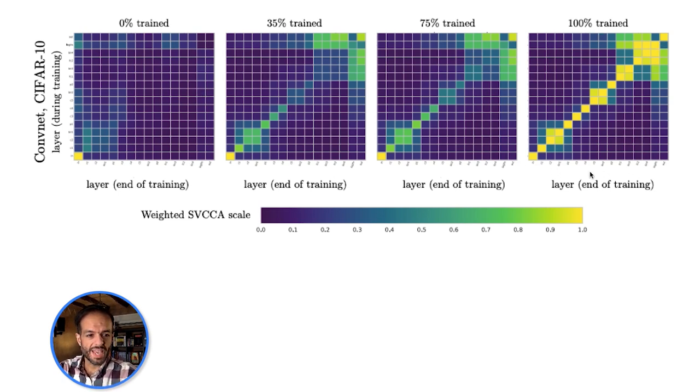As we go to the left, the x-axis continues to be the value of the outputs of each layer at the end of training, but the y-axis now is at 75% of training this ConvNet on CIFAR-10. You can see that the early layers are still similar - there is high similarity in the first eight layers between 75% and 100% training. While the later layers are really not similar. You can see this more and more as we go into earlier stages of the training process.